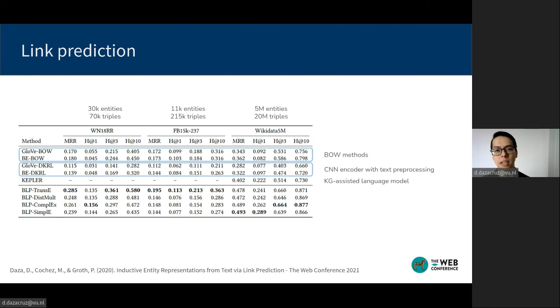Lastly, we compare with Kepler, which is a language model trained with an additional link prediction objective. We observe that BLP in combination with different scoring functions results in the best performance against these baselines.